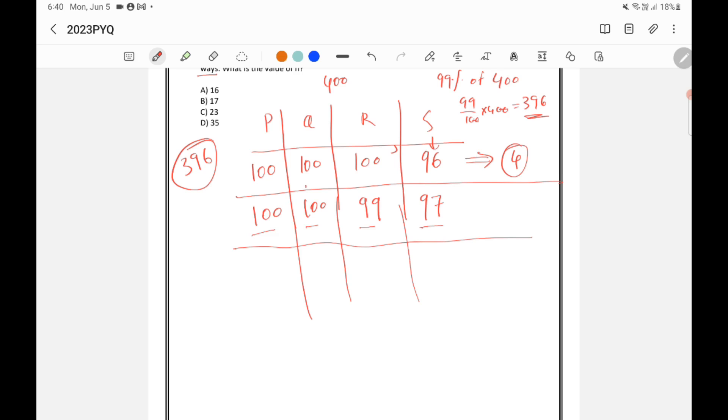So you know that here, if these are different, if the marks are different, then there will be total 4 factorial possibilities. But here, 2 papers are getting same mark. So you need to do 4 factorial by 2 factorial.